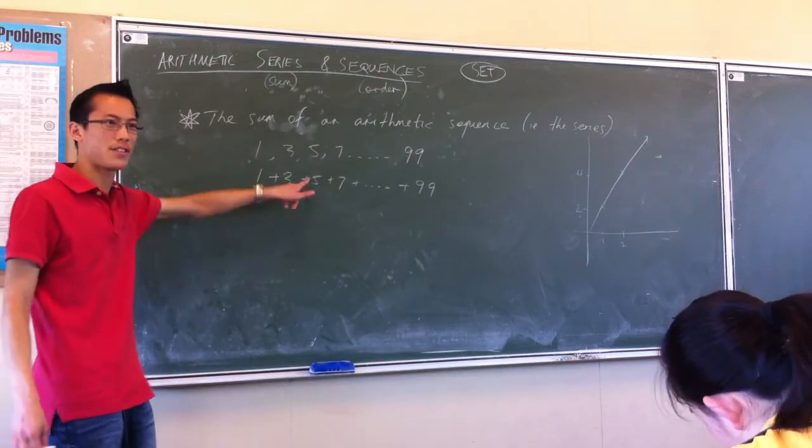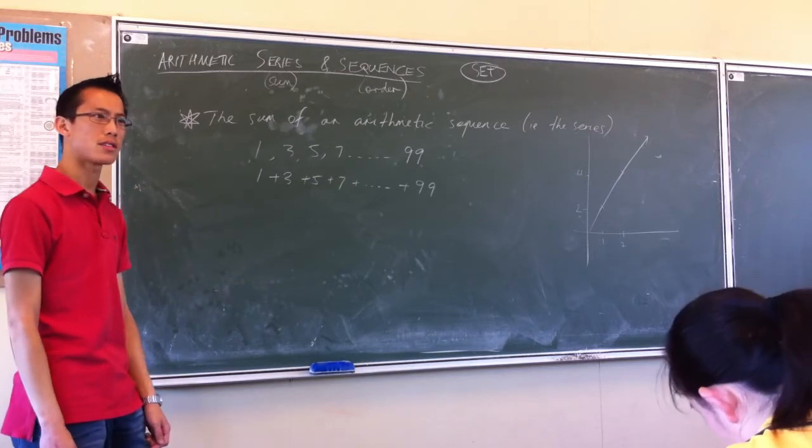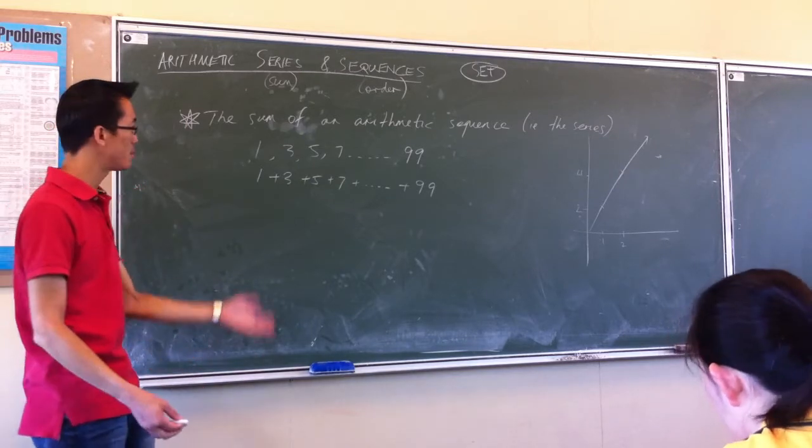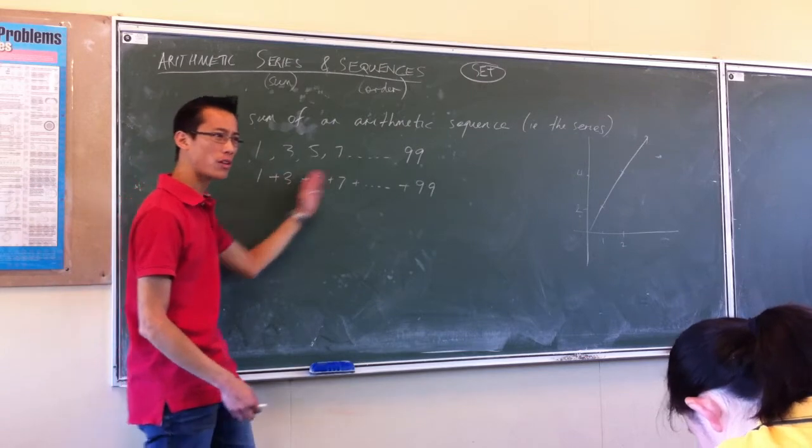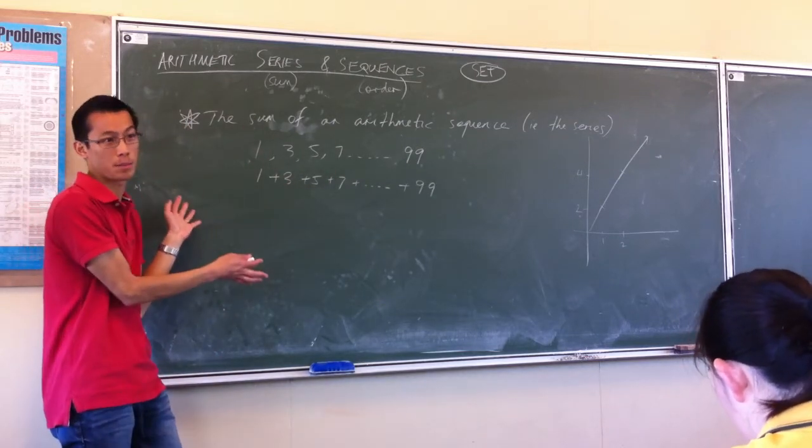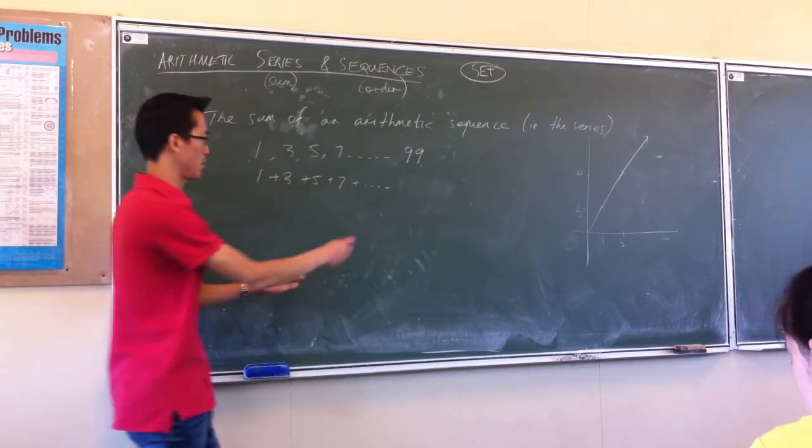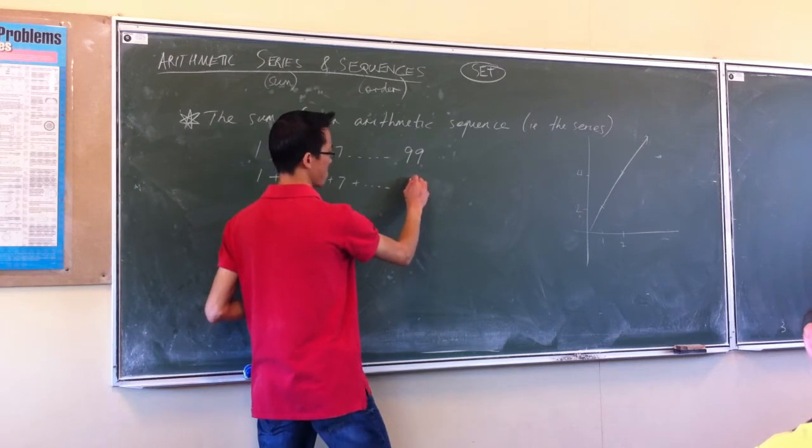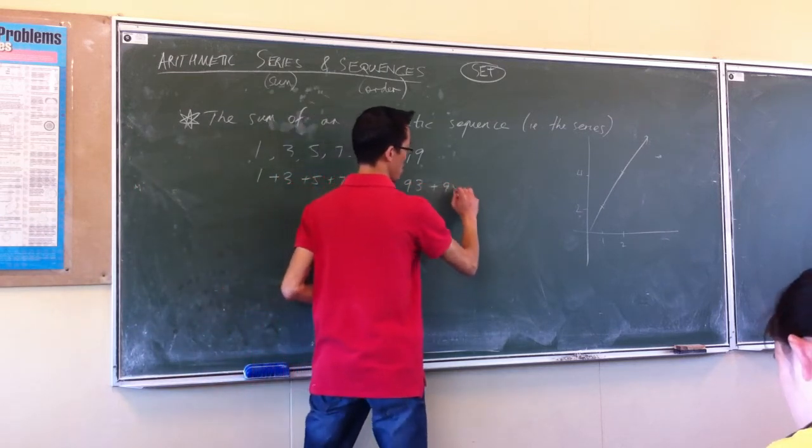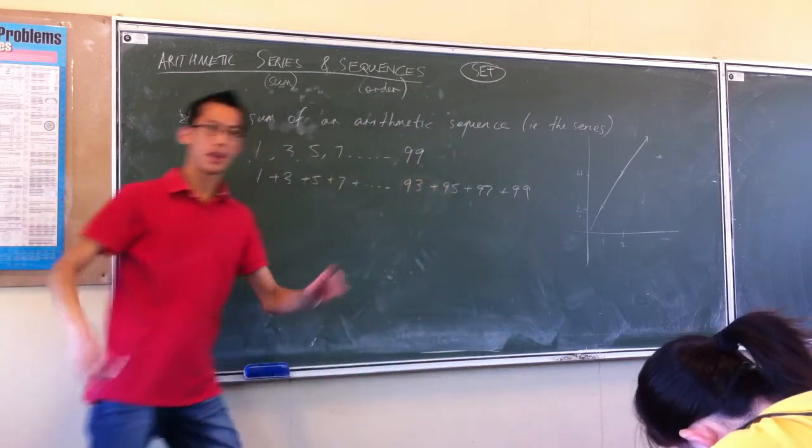But of course, if you've ever been given this task, like in year 7 or 8 or something like that, you can see there's a faster way to do this. Because of the orderliness of this series, there's a pattern we can exploit. And it'll become a little more obvious if I put a few more of the end terms on there. So let's see, 93, 95, 97, 99. Now here's the idea.